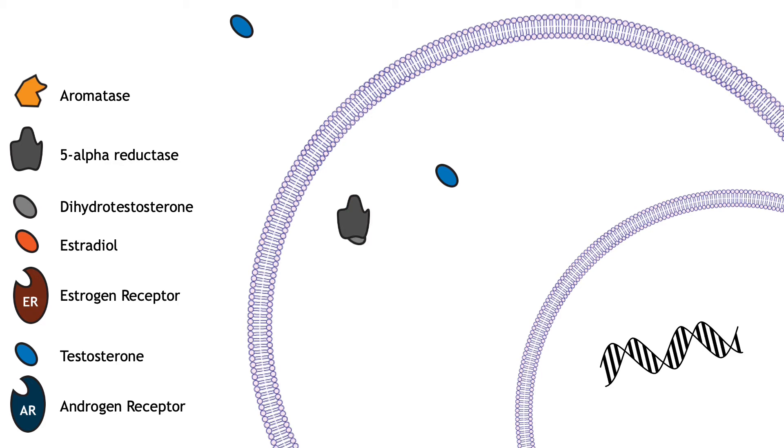5-alpha reductase converts testosterone into dihydrotestosterone, or DHT, another androgen that is able to bind the androgen receptor.